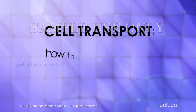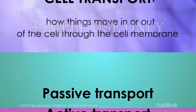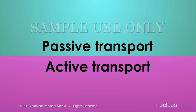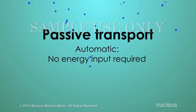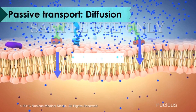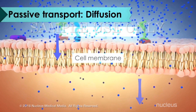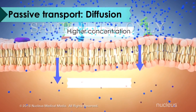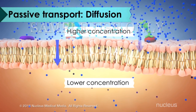Cell transport is the process of how things move in or out of the cell through the cell membrane. There are two broad categories of cell transport. The first category is passive transport. For a cell, passive transport means it's an automatic process that doesn't require any input of energy. For example, diffusion is a passive process in which particles move either into or out of the cell from an area of higher concentration to an area of lower concentration. The cell doesn't use any energy when this happens.